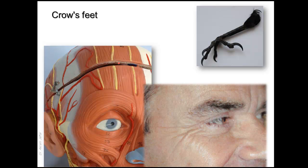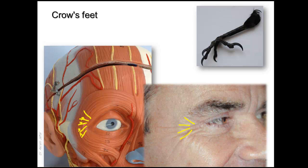The other wrinkle lines are those that form in the lateral canthal region, called crow's feet. They are caused by contraction of the orbital part of orbicularis oculi. The wrinkle lines form perpendicular to the muscle fibers; because the fibers are concentric and curved, the wrinkle lines radiate in different obliquities. Injection is given close to the lateral canthus, and care should be taken that the injection points are not too close to the orbital margin.